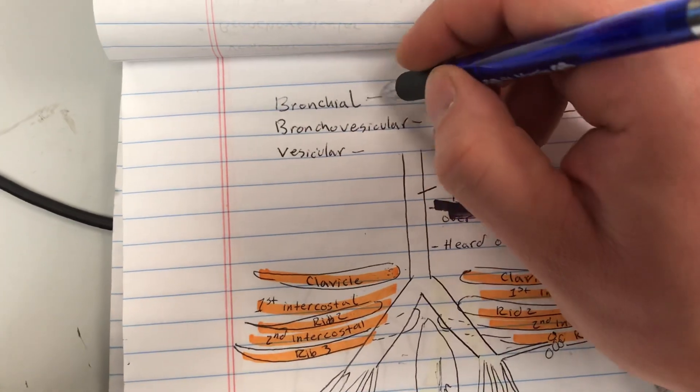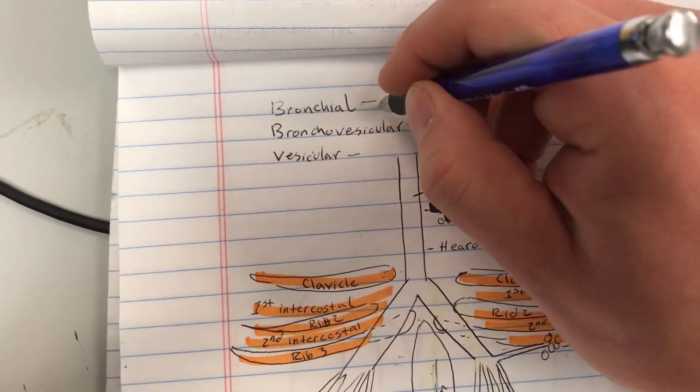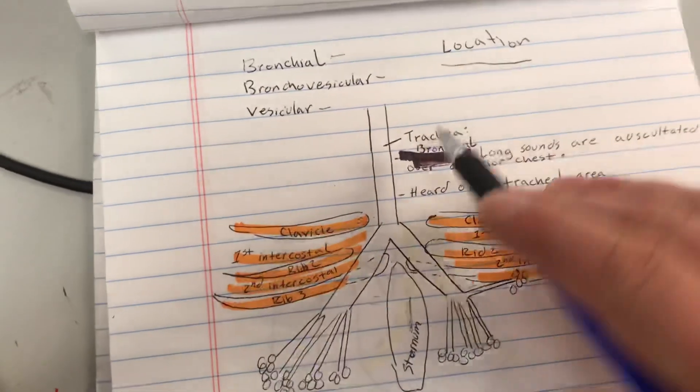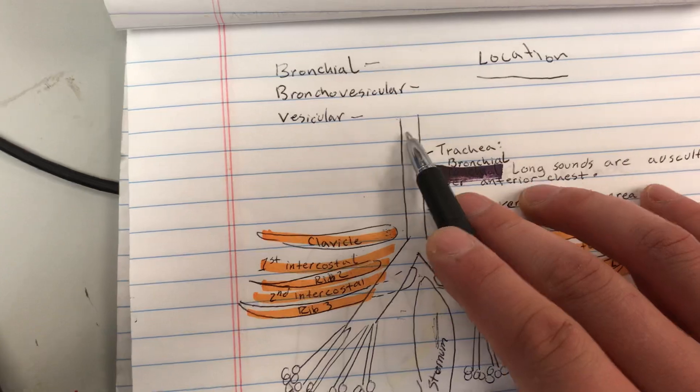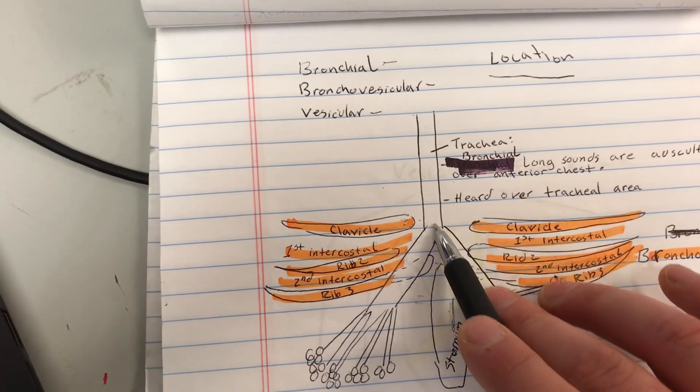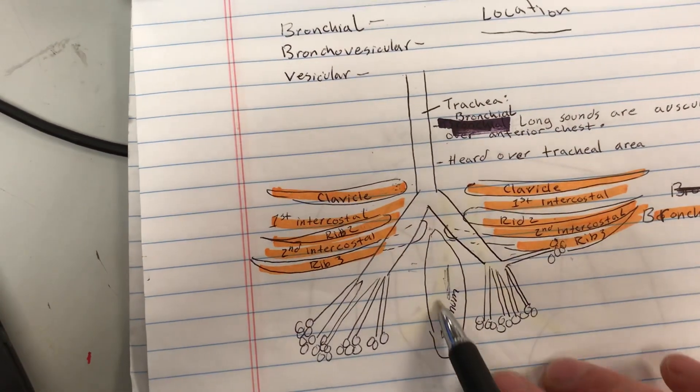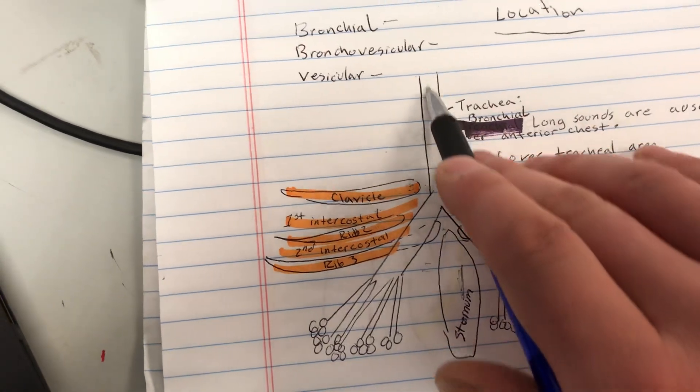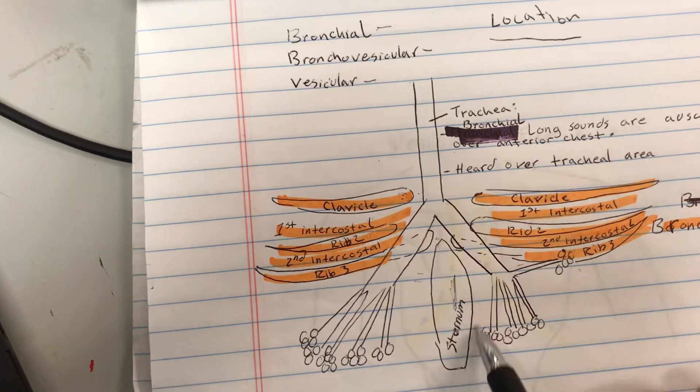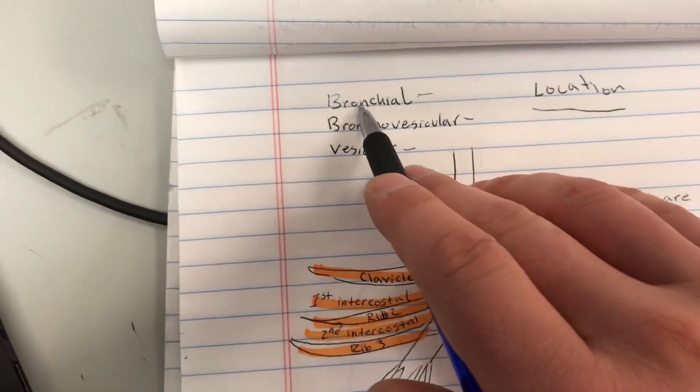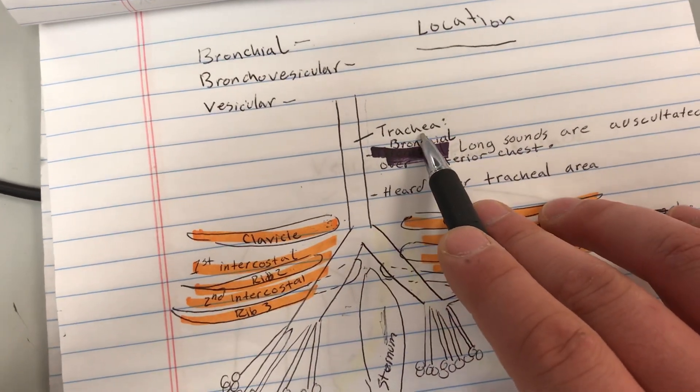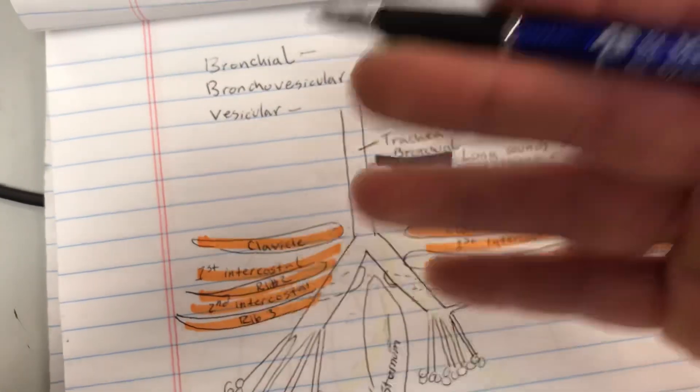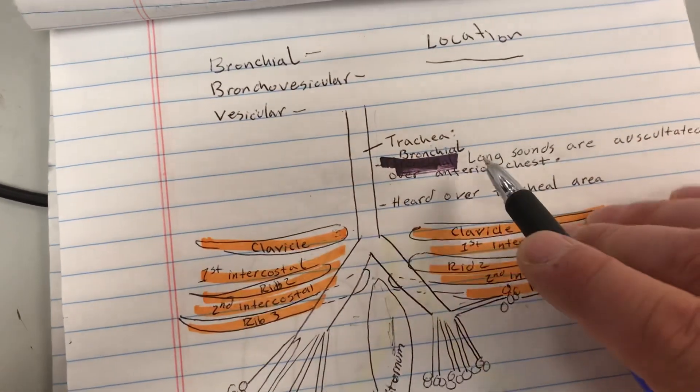Whenever you hear bronchial lung sounds or they were taken in the bronchial area, that means the lung sounds were auscultated over where the trachea lies in the chest area. So just down the middle through your sternum right here, this is the area where those lung sounds were taken. Bronchial lung sounds are taken over the trachea on the front of the body, the anterior part.